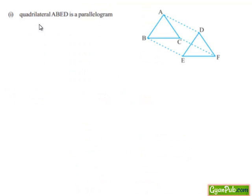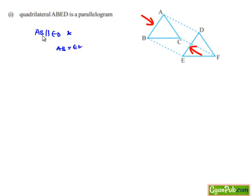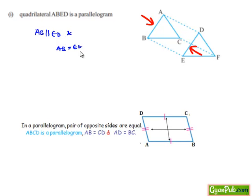For the first part, we need to prove that quadrilateral ABED is a parallelogram. In order to prove this, let us consider the quadrilateral ABED. We are given that AB is parallel to ED and also AB is equal to ED. Since the opposite sides are parallel and equal, we can say the given quadrilateral ABED is a parallelogram.